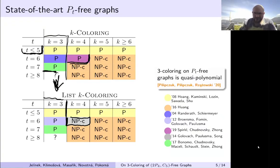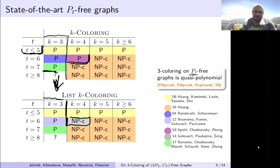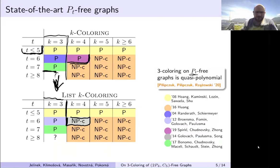Recently there was a very large breakthrough: for three-coloring and also for maximum independent set on Pt-free graphs, it was shown that we can solve it in quasi-polynomial time. So we are not yet in polynomial time, but at least this works for any T. The question remains whether we can go up to polynomial or not — this is a large open problem.